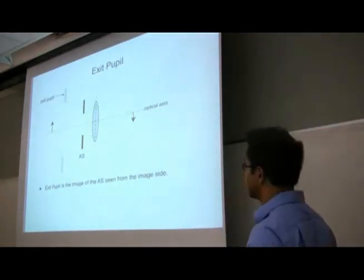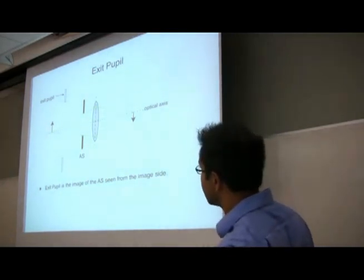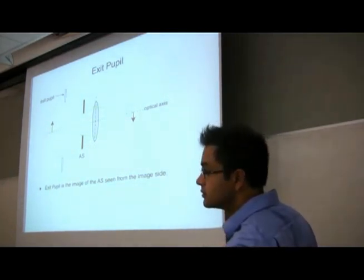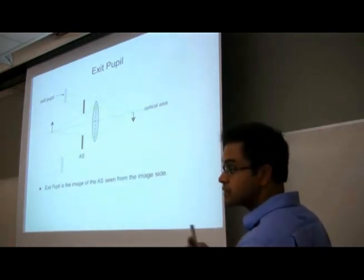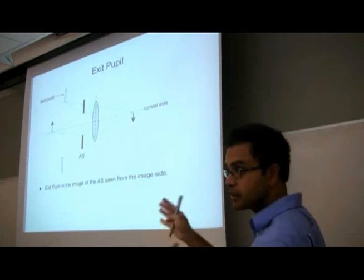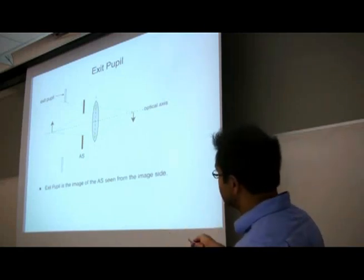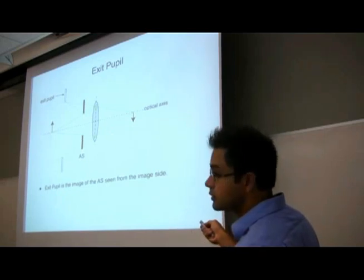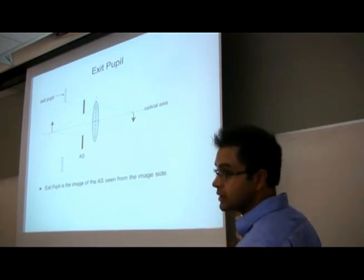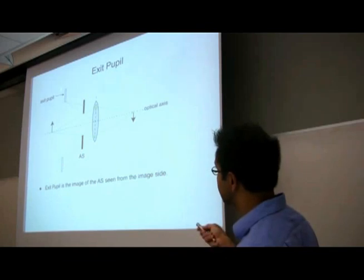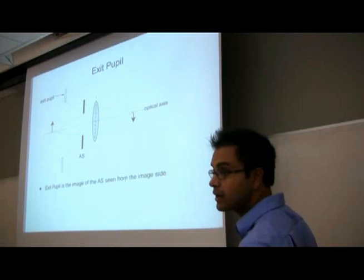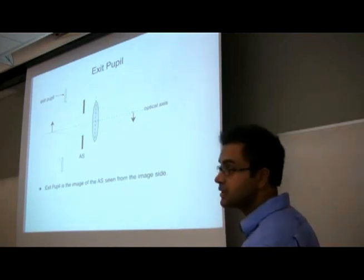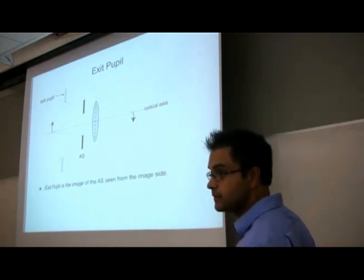The exit pupil is the same thing but on the image side. If you have an aperture stop in front of the lens — you can block rays either before or after the lens — the exit pupil is the image of the aperture stop seen from the image side. It determines the maximum angle of the cone of rays that can reach the image.